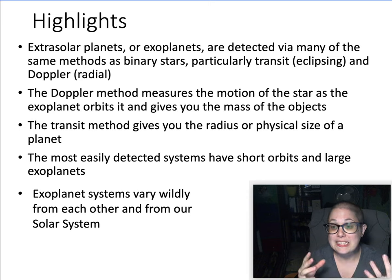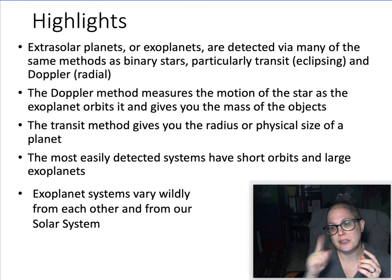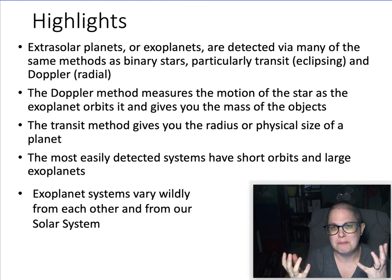And the most easily detected systems, the ones that were detected first in the mid-late 90s, those tended to have really small orbits, so really short periods, and really massive exoplanets. But again, that is in large part an observational bias.